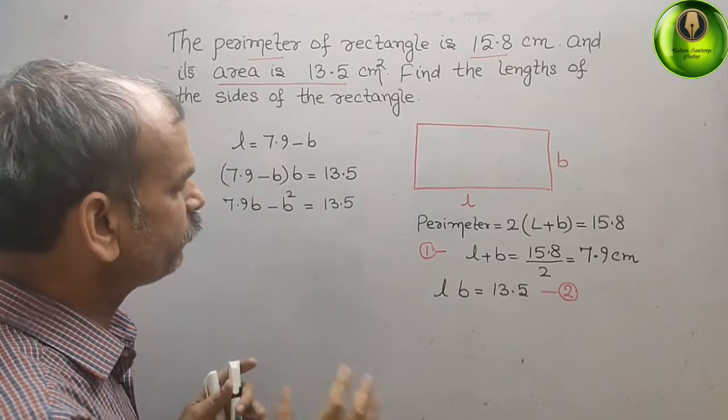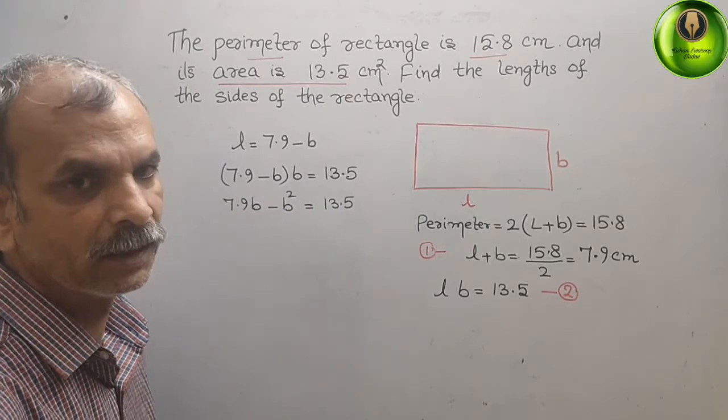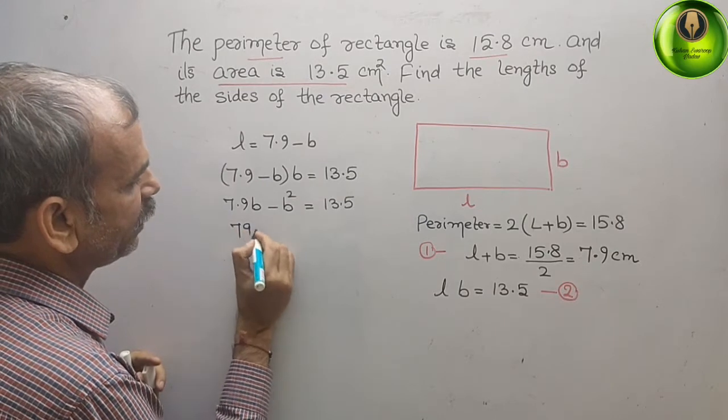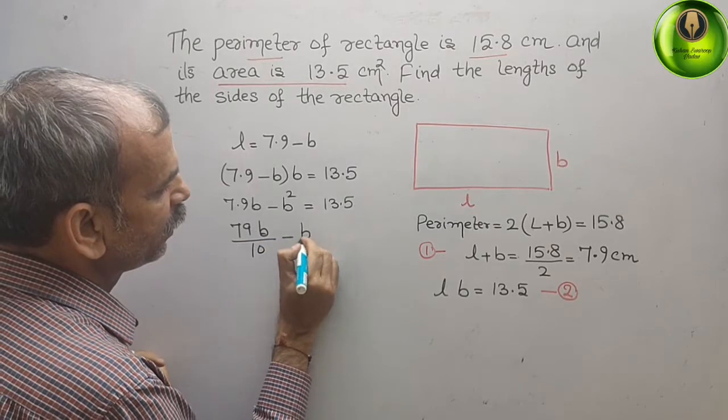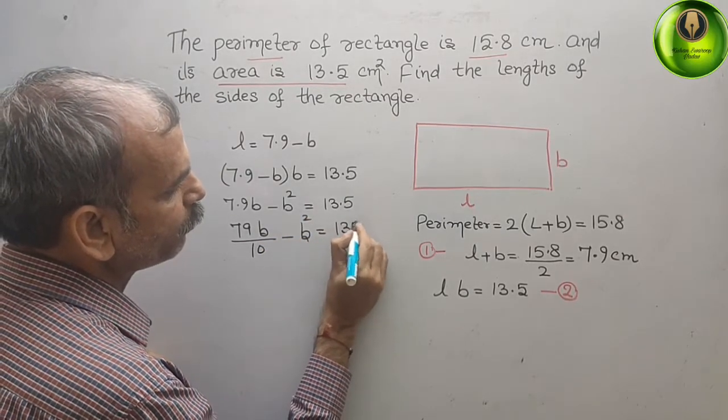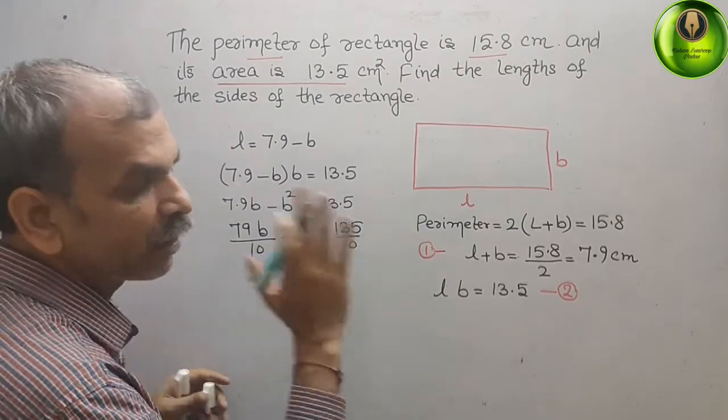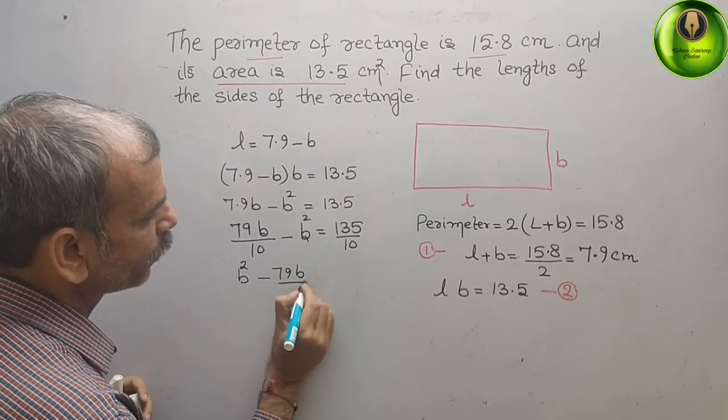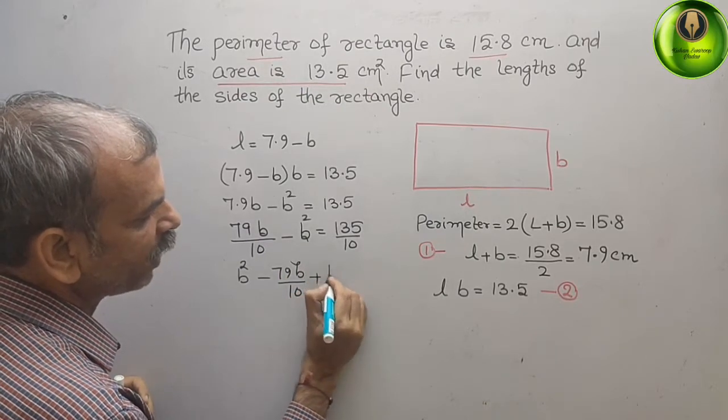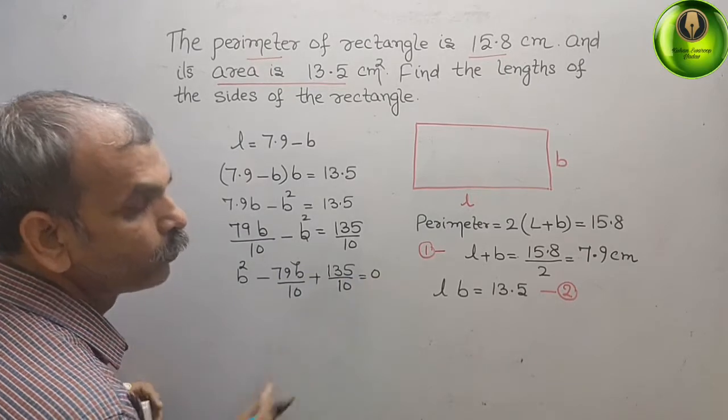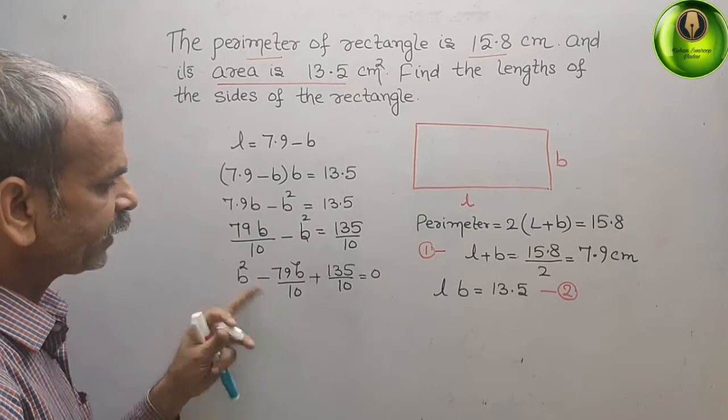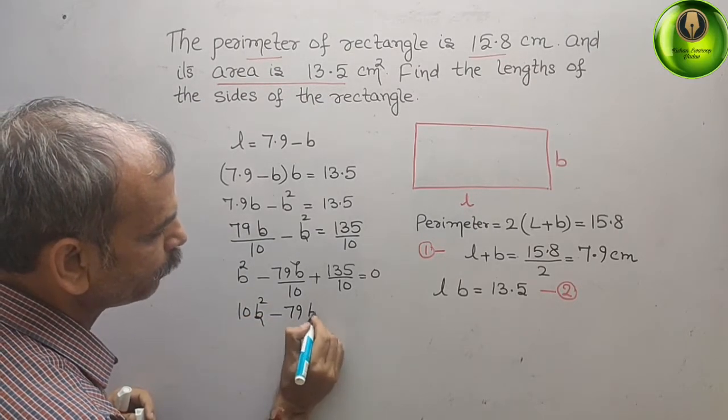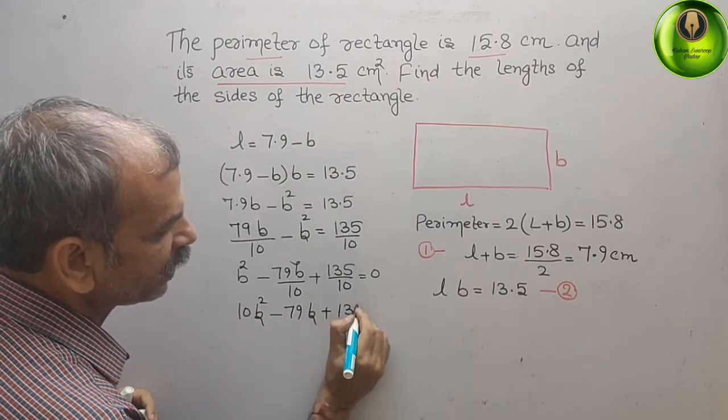Now, what we will do? Just, we will take out the digits, point from there. So, for that, we will divide. How we will write that? 79B by 10 minus B square. That is equal to 135 by 10. Now, bring everything to your right side. We will get B square minus 79B by 10 plus 135 by 10 plus 135 by 10. That gives you 0. Now, take the LCM. If you take the LCM, what you will get? We will get 10B square minus 79B plus 135. That gives you 0.